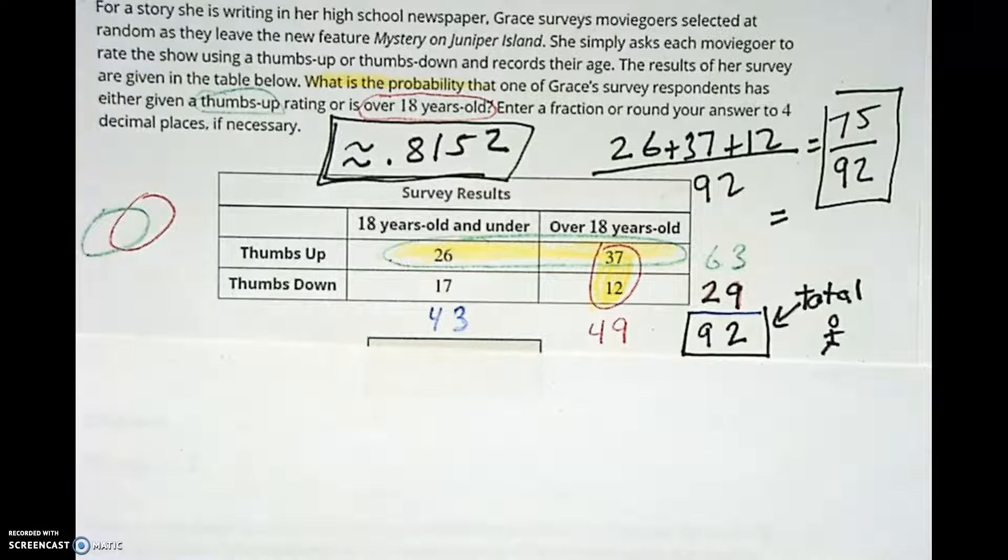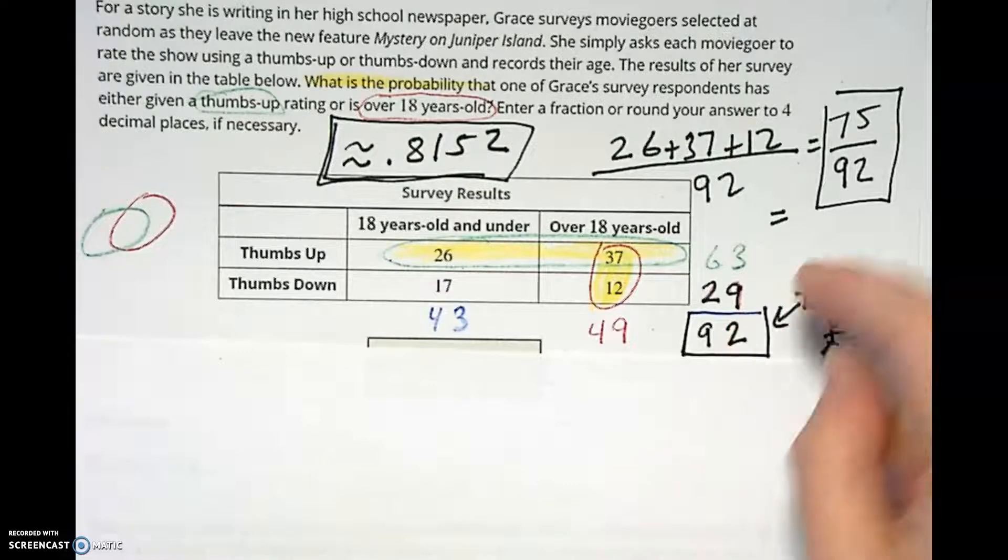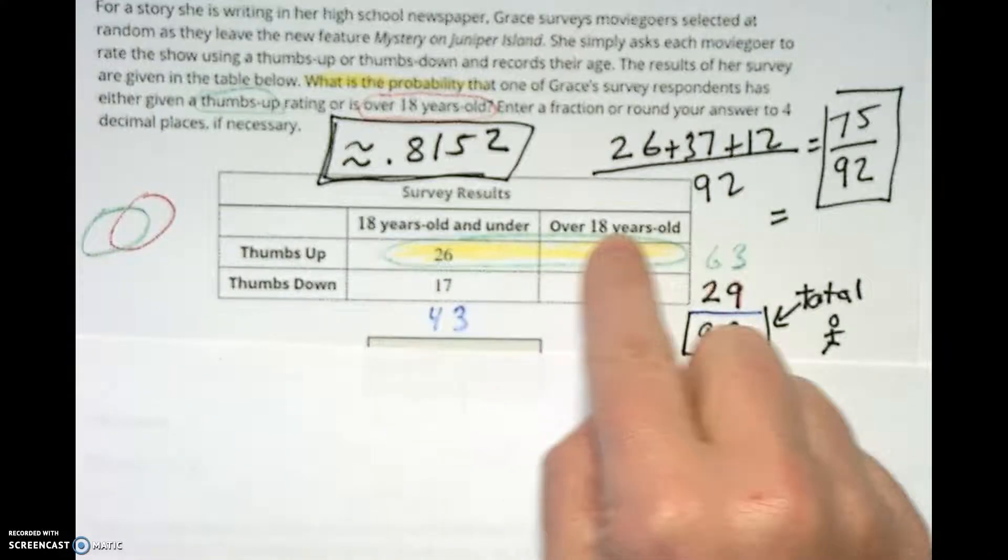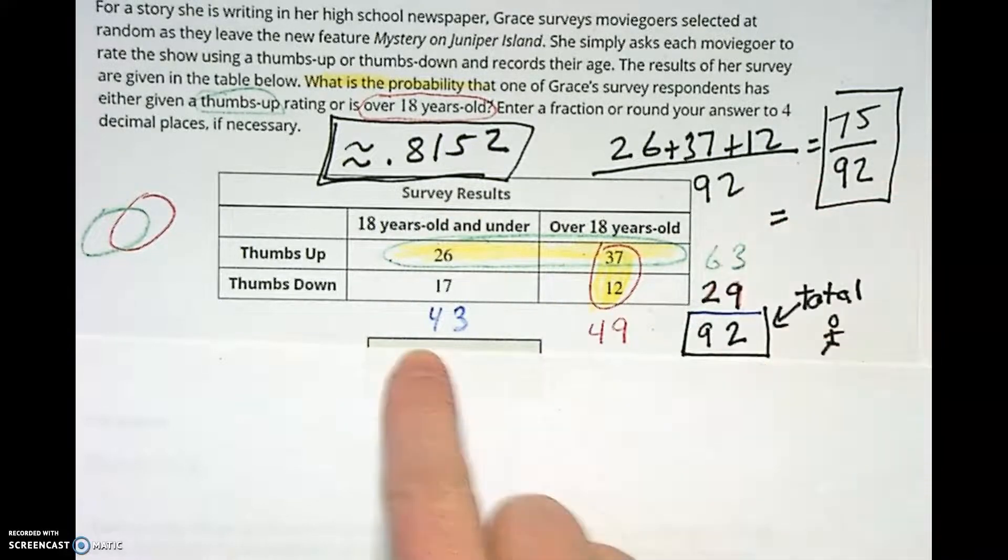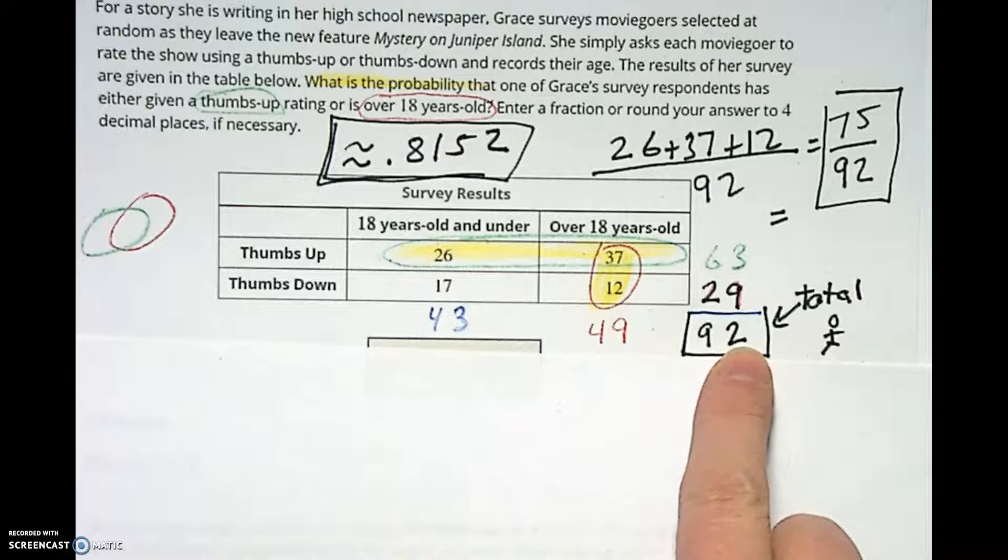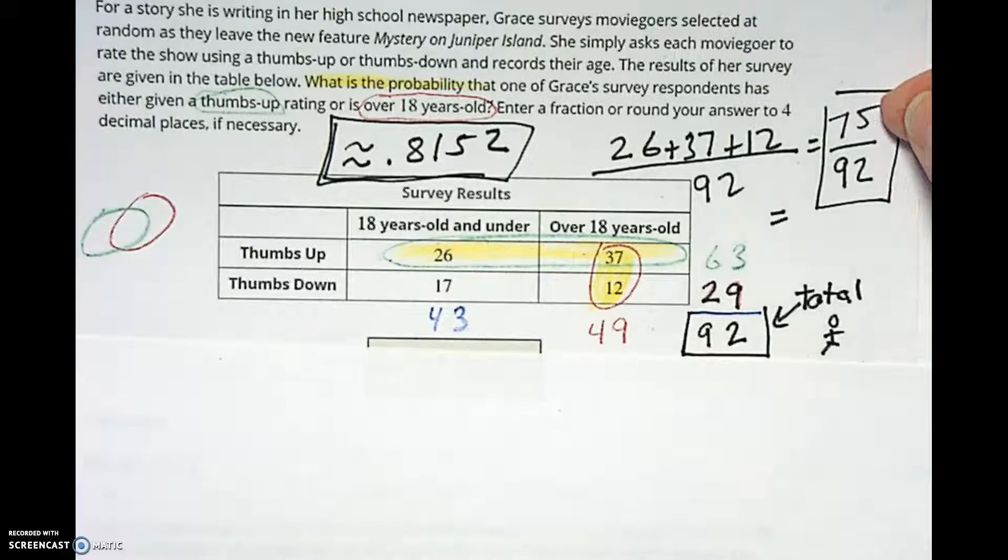Okay, one more little silly thing I want to point out, especially if this is a paper test and you're trying to fret over all the different things. So we've got the 75 over 92 which came from all this highlighted stuff, and I did the double check to make sure that this added up to 92 and this added up to 92. Another way you could have gotten the 75 was...